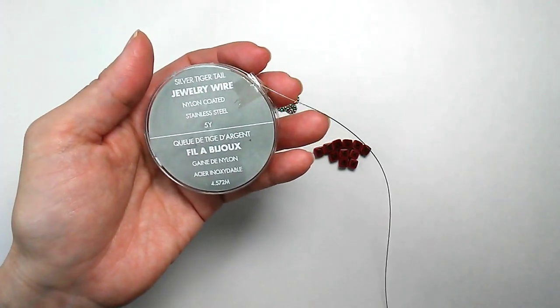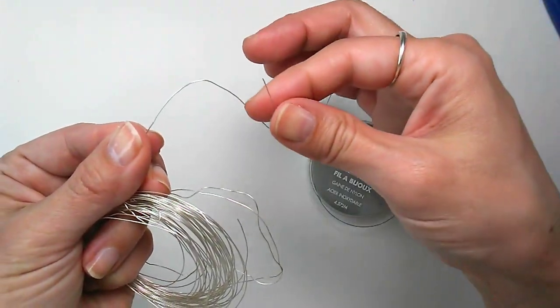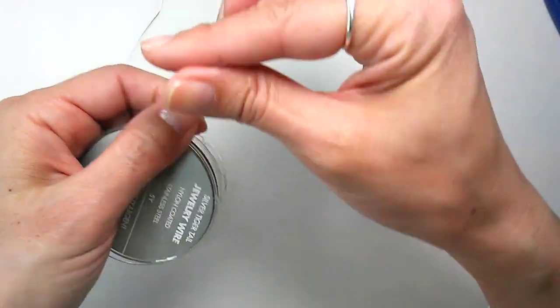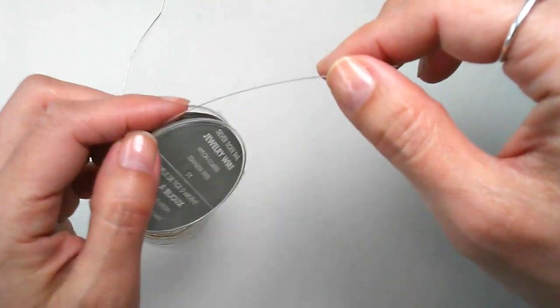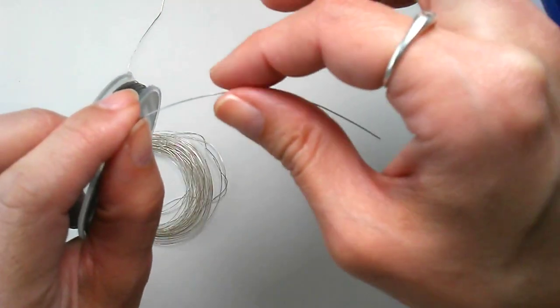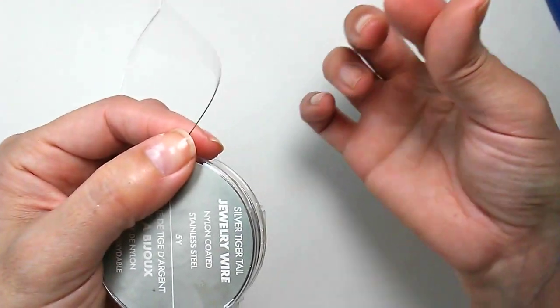You know how regular wire will bend and stay that way? This tiger tail wire is very flexible, but it resists bending and kinking. So it gives your jewelry more strength. You know, stronger than string, but still has a nice hang to it.